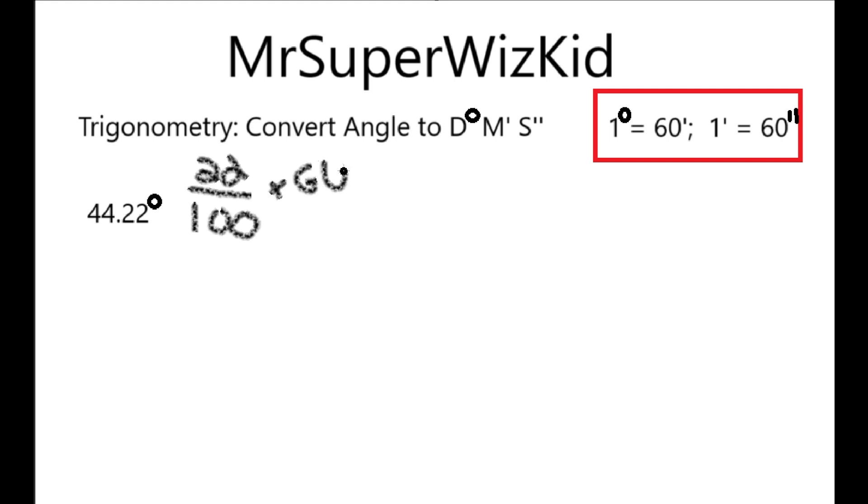So, I'll put that over 1, because any number is itself over 1 when it comes to fractions. And then now I'll reduce. I can see that 10 can go into both of these, so I'll divide this by 10 and this by 10. So, 100 divided by 10 is 10, 60 divided by 10 is 6. And then I see this 22 and this 10 can reduce.